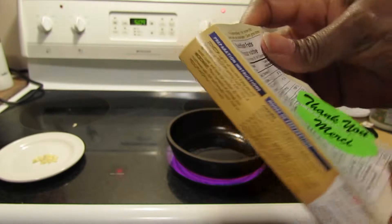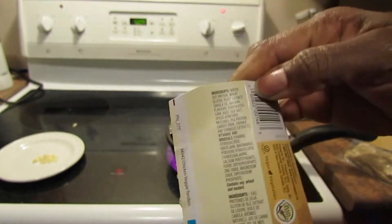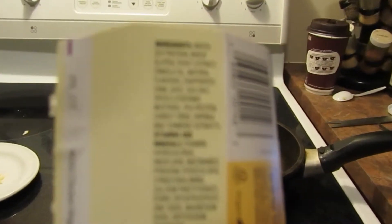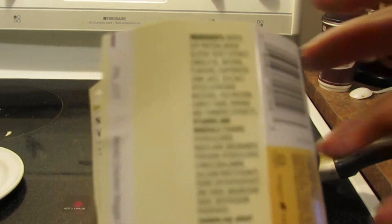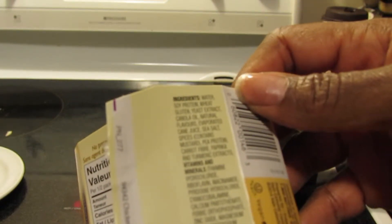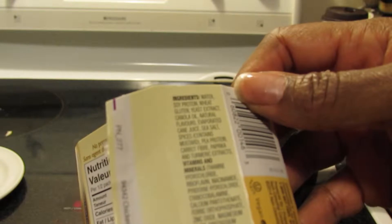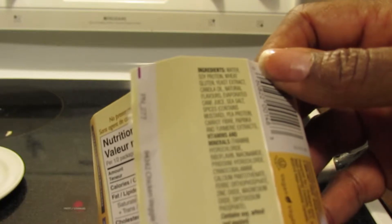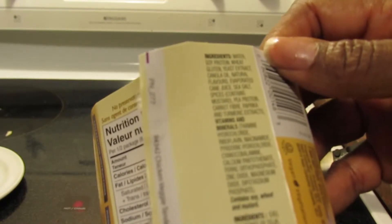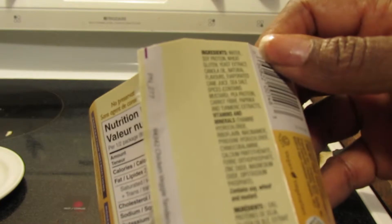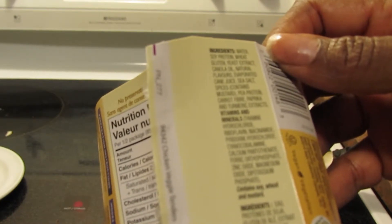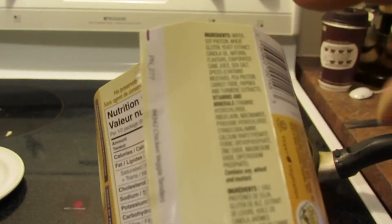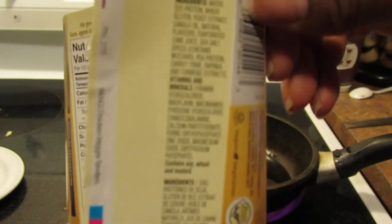Let me tell you what's in it. Ingredients: water, soy protein, wheat gluten, yeast extract, canola oil, natural flavors, evaporated cane juice, sea salt, spices, and contains mustard, pea protein, carrot fiber, paprika and turmeric extracts. It has thiamine hydrochloride, riboflavin, niacinamide, pyridoxide hydrochloride, and other vitamins and minerals. I'm tired of reading all that stuff out to you guys.